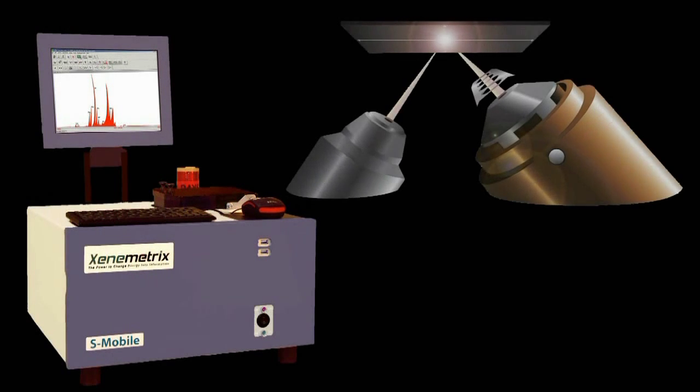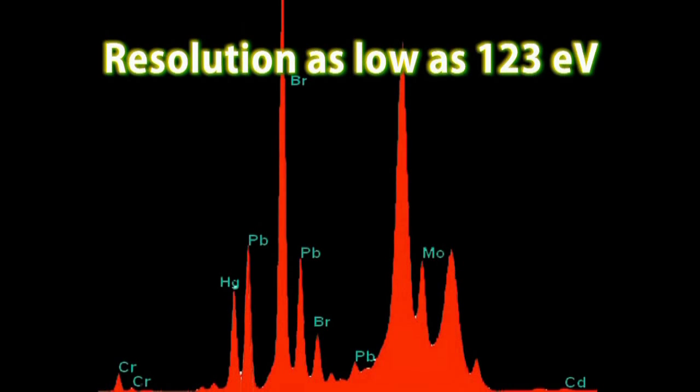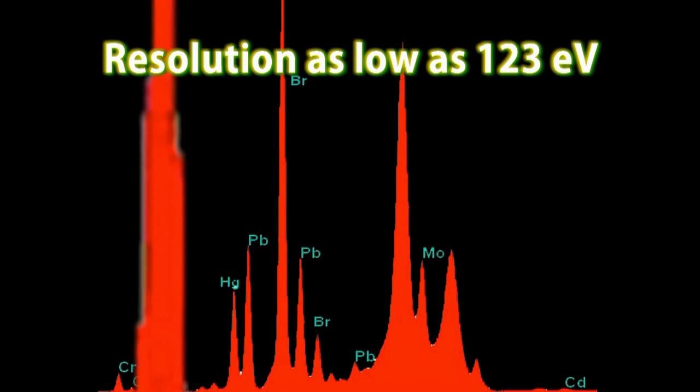S-Mobile performs elemental analysis from sub-PPM levels to 100% concentrations, with great resolution as low as 123 electron volts, thanks to the marvelous performance of the silicon drift detector.